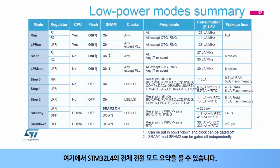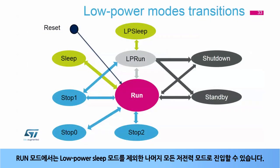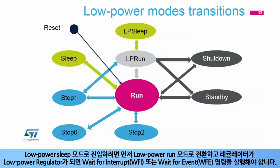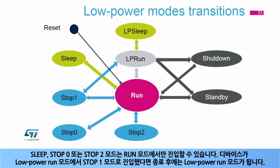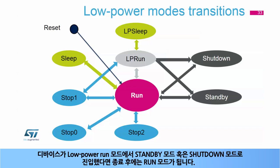Here you can see the summary of all the STM32L4 power modes. From run mode, it is possible to access all low-power modes except low-power sleep mode. To go into low-power sleep mode, the device must first move to low-power run mode and execute a wait-for-interrupt or wait-for-event instruction while the regulator is the low-power regulator. When exiting low-power sleep mode, the STM32L4 is in low-power run mode. From low-power run mode, it is possible to go into all low-power modes except sleep, stop zero, and stop two modes — those can only be entered from run mode. If the device enters stop one from low-power run mode, it will exit in low-power run mode. If the device enters standby or shutdown from low-power run mode, it will exit in run mode.